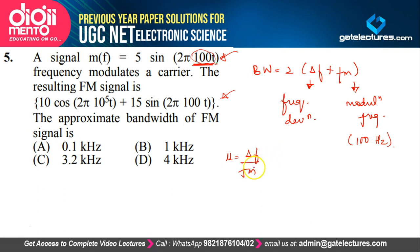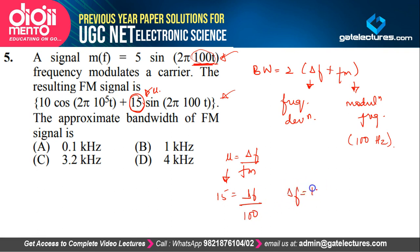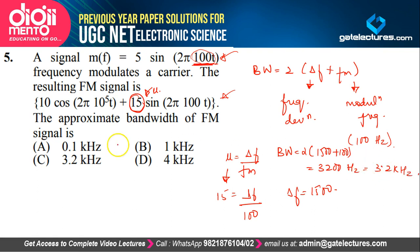The modulation index mu is represented by the coefficient KF in the FM equation, which here equals 15. With FM = 100 Hz and mu = 15, ΔF = 15 × 100 = 1500 Hz. Bandwidth = 2 × (1500 + 100) = 3200 Hz = 3.2 kHz. So the bandwidth for this FM signal is 3.2 kHz, which is option C.